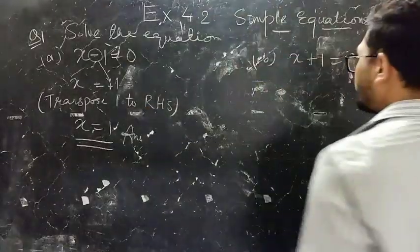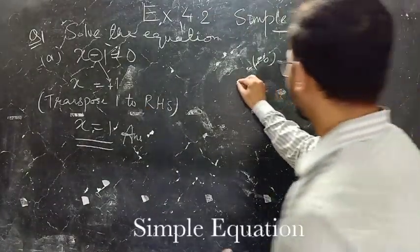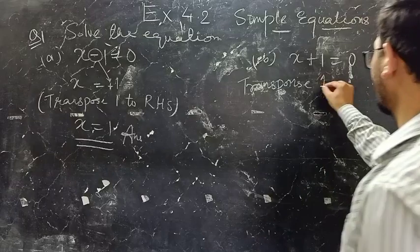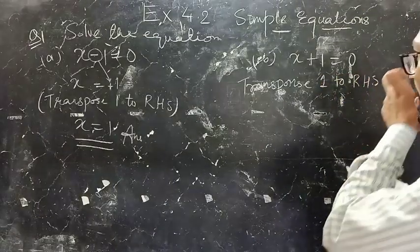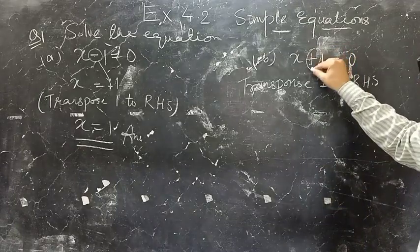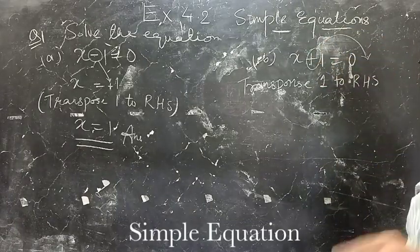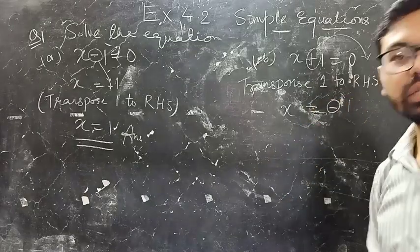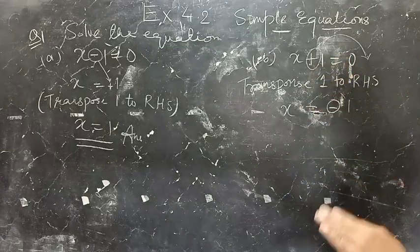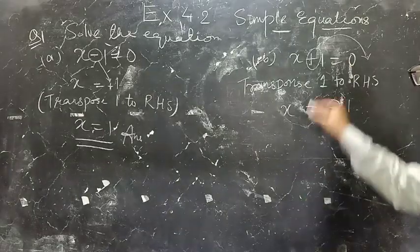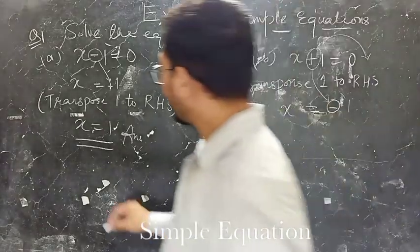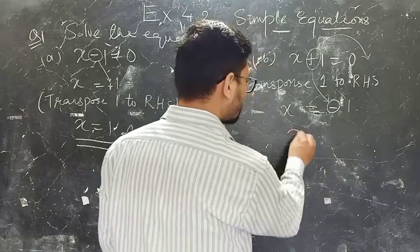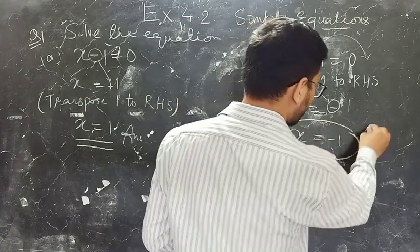Now the first step is transpose 1 to the RHS. This 1 is positive in the LHS, but when you take it to the RHS the sign gets changed. So x equals minus 1. Whenever you move a digit from LHS to RHS or from RHS to LHS, the sign gets changed. Here it was negative so it becomes positive; here it was positive so it becomes negative.